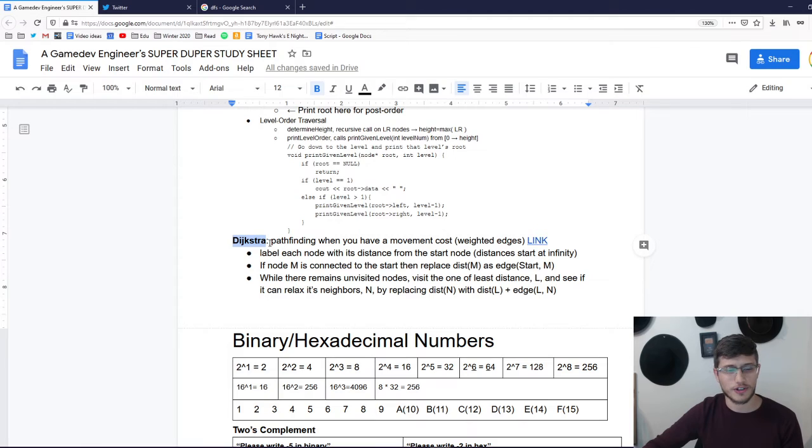That's a little bit different, it's not search per se. And so what you're going to be doing, it's particularly useful for when you have a movement cost across your edges. And so that process is actually pretty simple. And the way that that goes is you're going to label each node with its distance from the start node. Then if the node is connected to the start, you're going to replace that distance with the edge weight in order to get there.